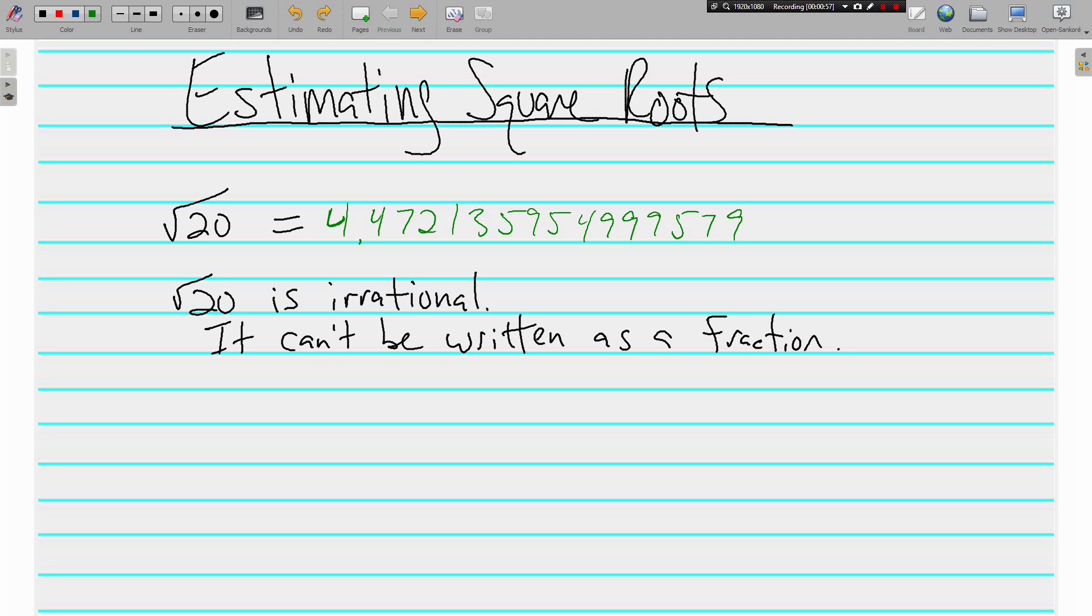It's irrational. The square root of 20 is irrational because we cannot write this as a fraction. The reason we can't do it is because that decimal does not terminate and does not repeat. There's no pattern. We can only write it as a fraction if that decimal stops or there's a pattern, but we can't, so it's irrational.